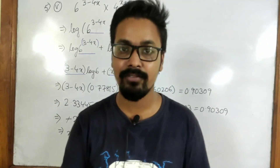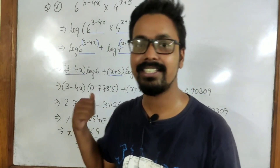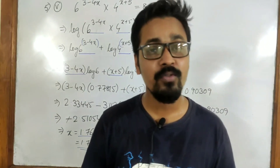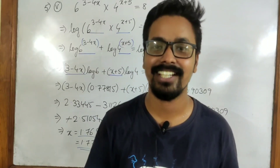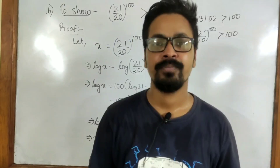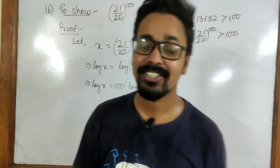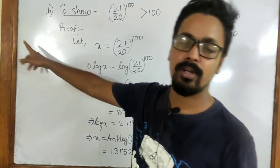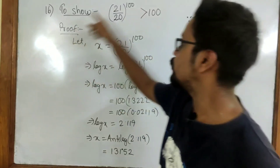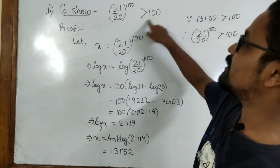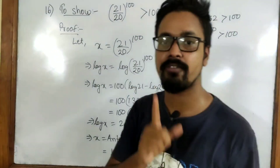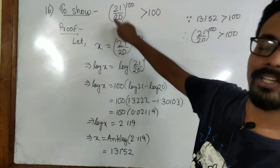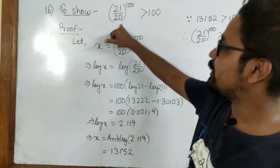The remaining sums which I have not done are actually easier than this, so you can go ahead and try those yourself. We move on to the last sum of this exercise which is question number 16. We have to show that 21 by 20 whole to the power 100 is greater than 100. Now in some books you may find it written as 21 by 10, but it will not be 21 by 10 — it will be 21 by 20.